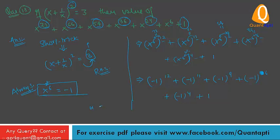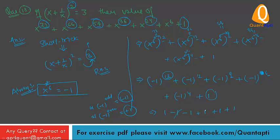Now we know that if minus 1 is raised to an odd power, the answer is minus 1. And if minus 1 is raised to an even power, the answer is plus 1. So: 12 is even, so minus 1 to power 12 is 1. 11 is odd, so minus 1 to power 11 is minus 1. 9 is odd, so minus 1 to power 9 is minus 1. 6 is even, so plus 1. 4 is even, so plus 1. And the constant is plus 1. The minus 1s and plus 1s cancel, giving us the answer 2.